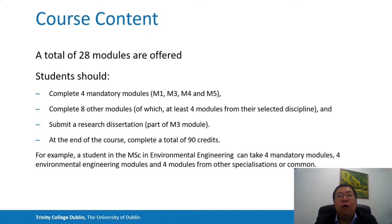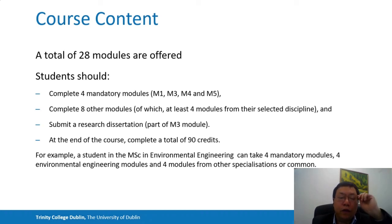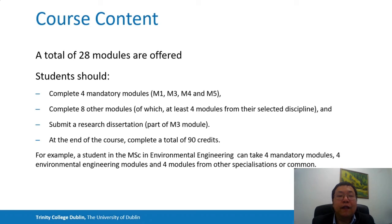Overall, we offer a total of 28 modules. Students should complete four mandatory modules and eight other modules, of which at least four modules are from their selected discipline, and submit a research dissertation. At the end of the course, students should complete a total of 90 credits. For example, MSc in Environmental Engineering students can take four mandatory modules, at least four Environmental Engineering modules, and four modules from other specializations or common modules.